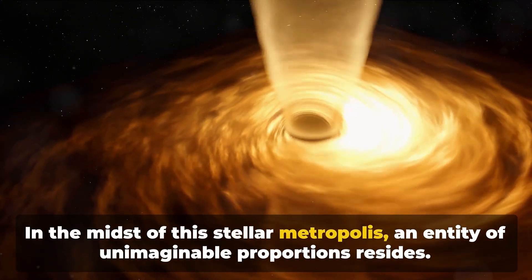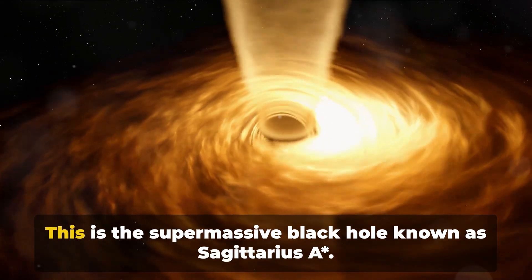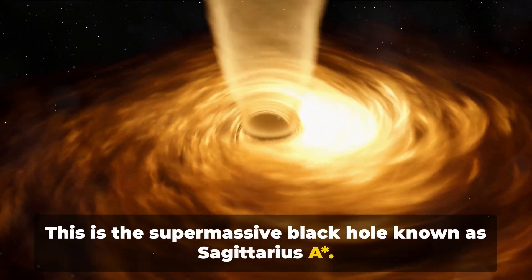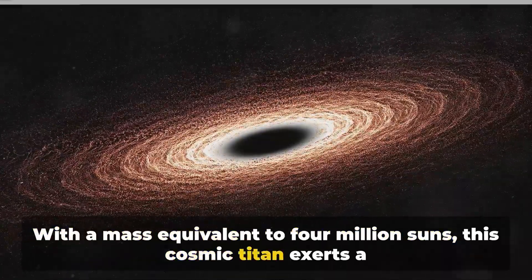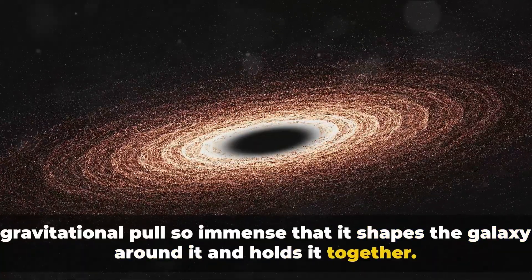In the midst of this stellar metropolis, an entity of unimaginable proportions resides. This is the supermassive black hole known as Sagittarius A asterisk. With a mass equivalent to 4 million suns, this cosmic titan exerts a gravitational pull so immense that it shapes the galaxy around it and holds it together.